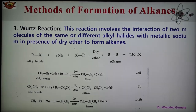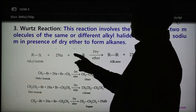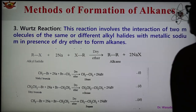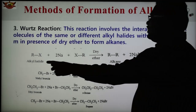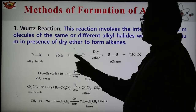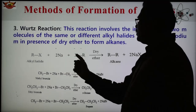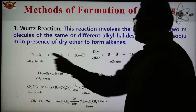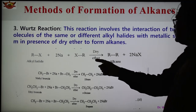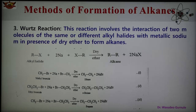In the Wurtz reaction, two molecules of alkyl halide are shown: RX and RX react with two sodium atoms in dry ether. The two NaX molecules are removed, and the two alkyl groups R join together to form the alkane. This is the general reaction of the Wurtz reaction.